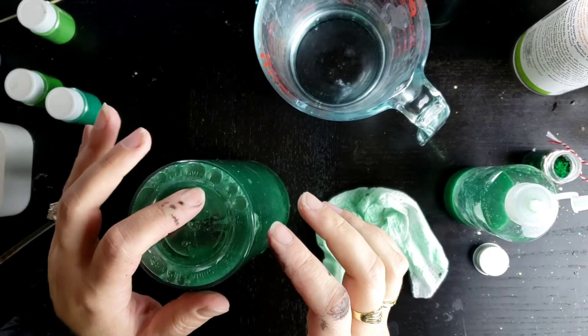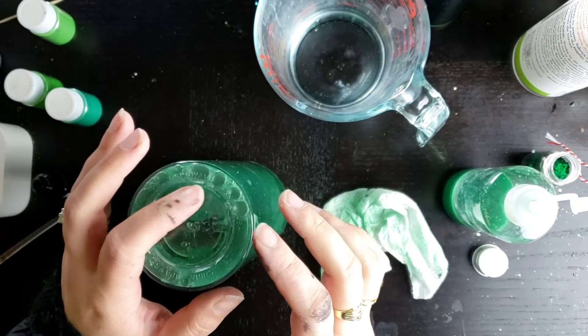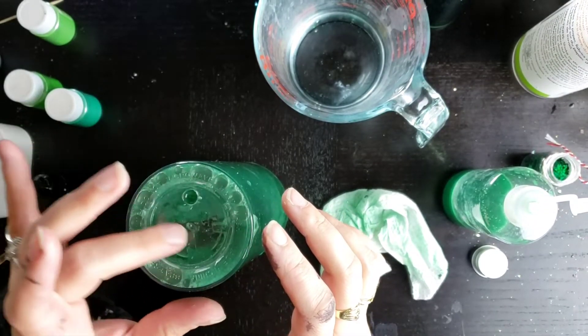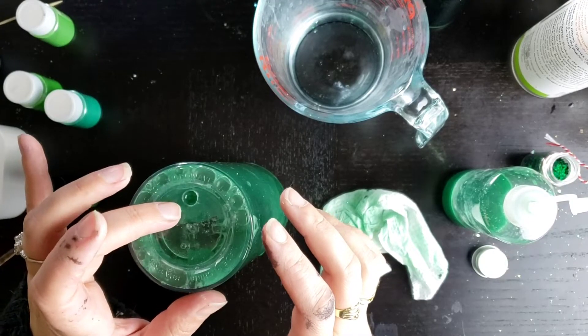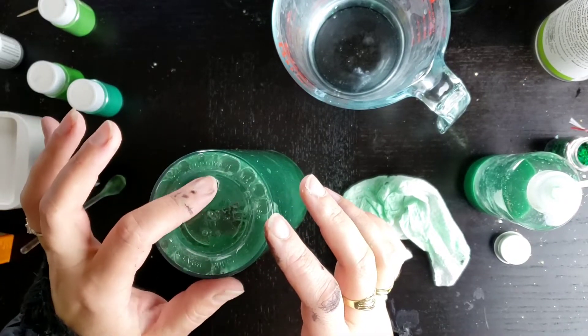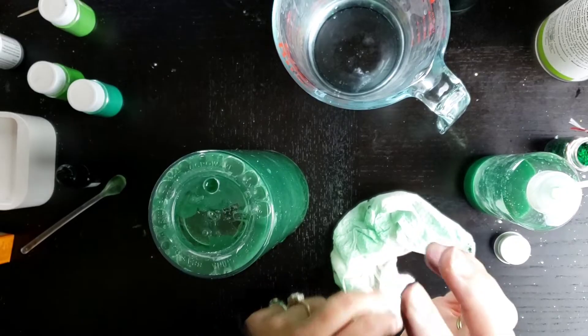I put either a furniture bumper, a glue dot, whatever you happen to have, and then put your UV resin on there, UV light, seal it up, then you're done.